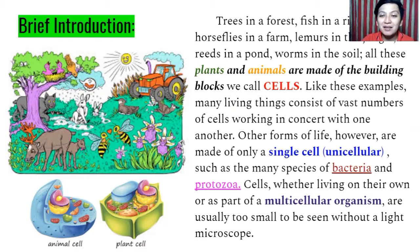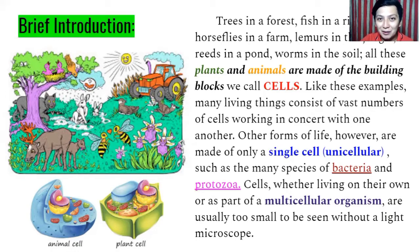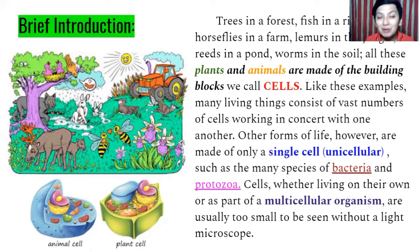Many living things consist of vast numbers of cells working in concert with one another. Other forms of life, however, are made of only a single cell. When we are talking about single-celled organisms, they are called unicellular — such as the many species of bacteria and protozoa. They are only one cell, but they are considered living things.